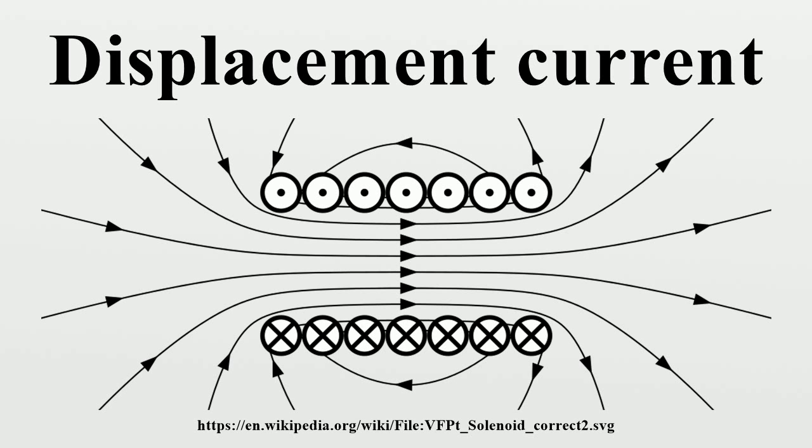Next, this displacement current is related to the charging of the capacitor. Consider the current in the imaginary cylindrical surface shown surrounding the left plate. A current, say I, passes outward through the left surface L of the cylinder, but no conduction current crosses the right surface R. Notice that the electric field between the plates C increases as the capacitor charges, that is, in a manner described by Gauss's law.